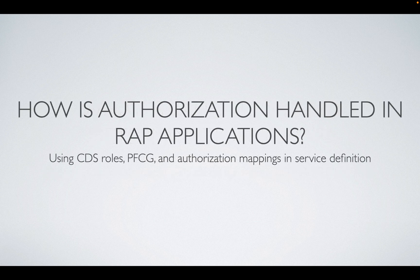How is authorization handled in RAP applications? Authorization can be done at the CDS level using access control with the @AccessControl.authorizationCheck annotation set to true. PFCG roles can also be maintained and assigned. Additionally, authorization mappings can be used in the service definition. These are the various ways authorization is handled in RAP.